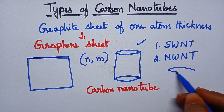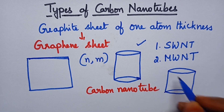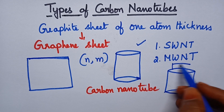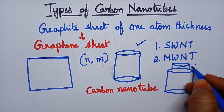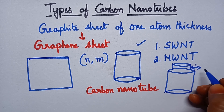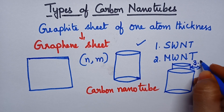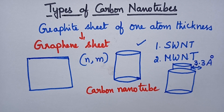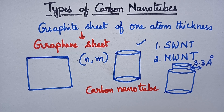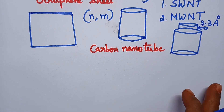Whenever the graphene sheet is rolled multiple times, it results in the formation of multi-walled carbon nanotubes. It consists of a number of layers and the inter-layer distance between the two walls is around 3.3 Angstrom units. Let us see the detailed structures of single-walled and multi-walled carbon nanotubes.